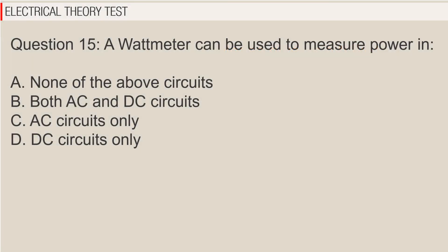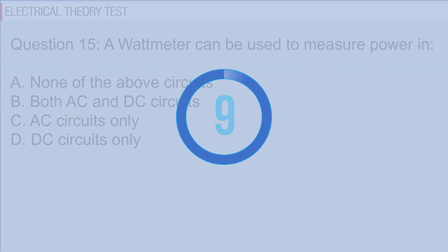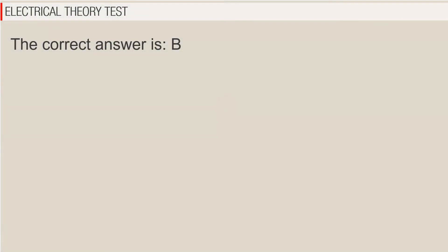Question 15: A wattmeter can be used to measure power in A. None of the above circuits, B. Both AC and DC circuits, C. AC circuits only, D. DC circuits only. The correct answer is B.